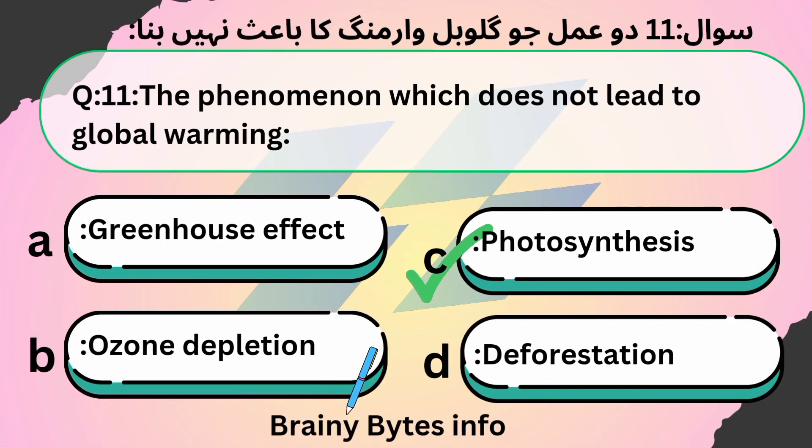The phenomenon which does not lead to global warming — option C — photosynthesis.